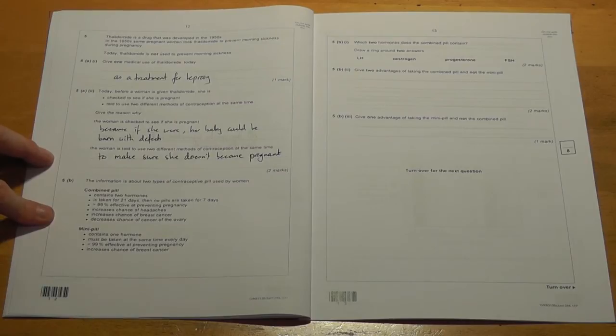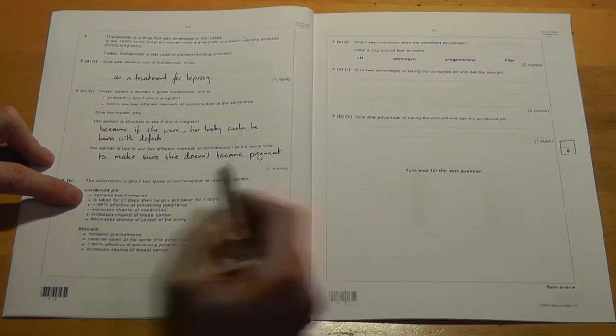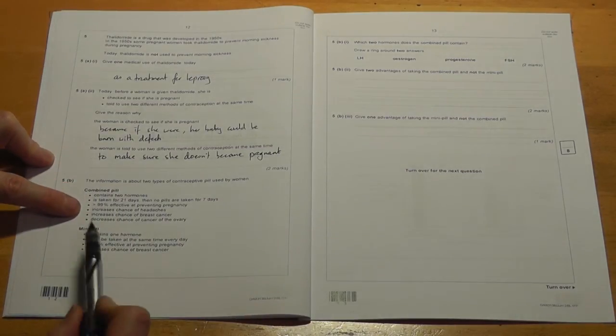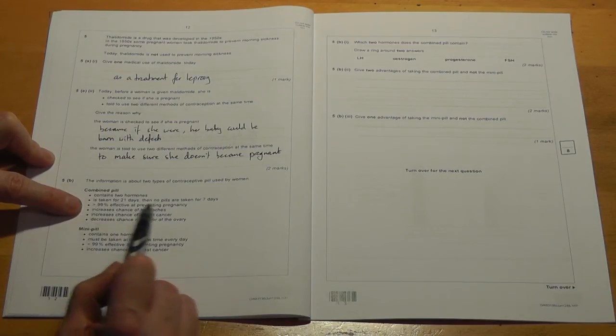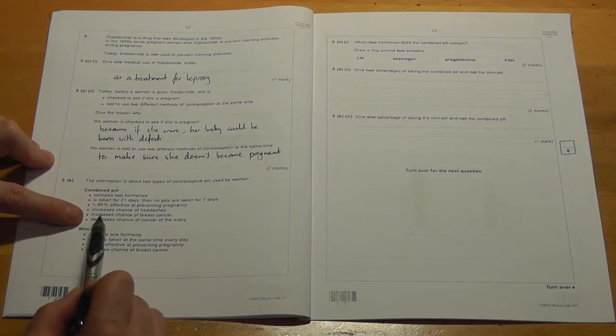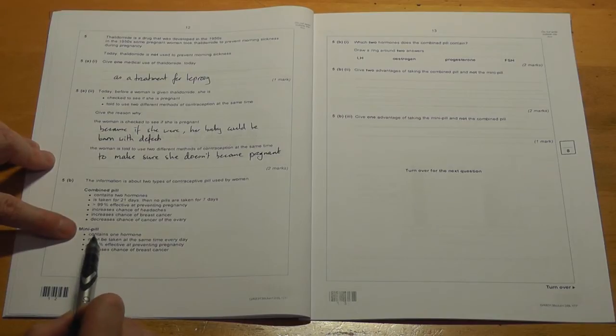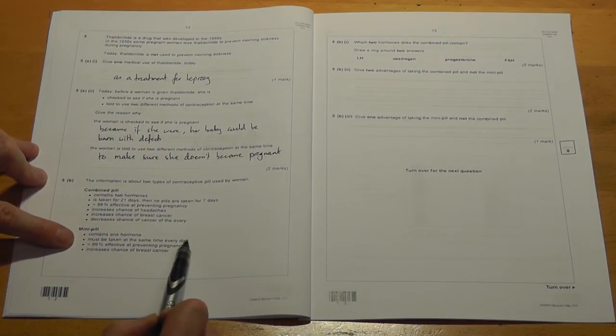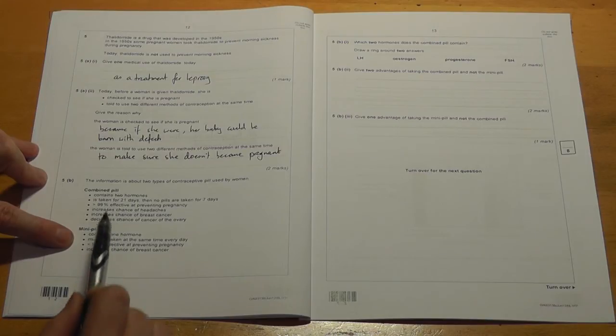Okay, now we've got a whole set of information about types of contraceptive pills used by women. A combined pill, which has got two hormones in, taken for 21 days and then nothing for seven. That symbol means more than, so more than 99% effective, but increases your chance of headaches and breast cancer, but decreases your chance of cancer of the ovary. Well, you've got the mini-pill, just one hormone. It must be taken the same time every day and it's less than 99% effective and increases your chance of breast cancer.